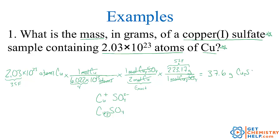So the mass of copper(I) sulfate is 37.6 grams. To summarize: we had particles, so we used Avogadro's number to get into moles of copper. Then, because we had two different substances, we used the mole-to-mole ratio to go from copper to copper(I) sulfate. Finally, we used molar mass to go from moles to mass.